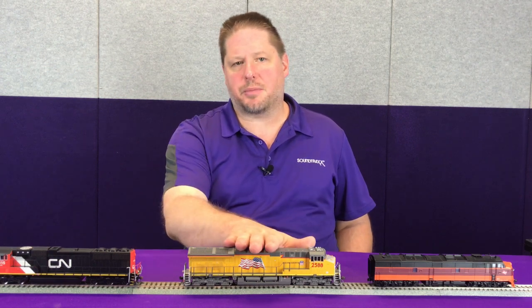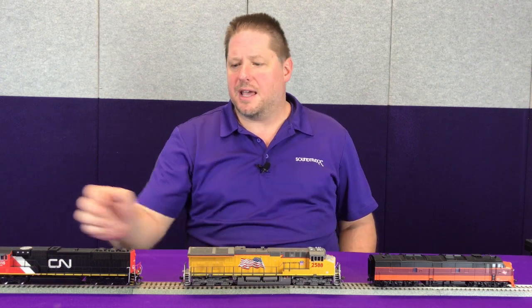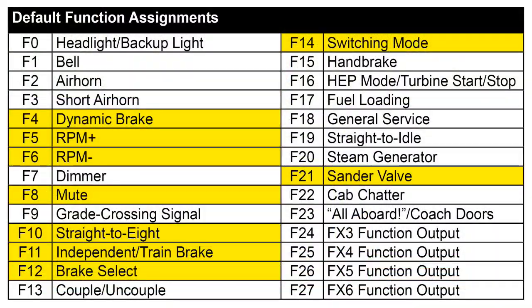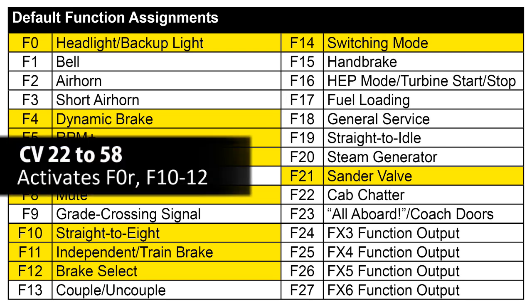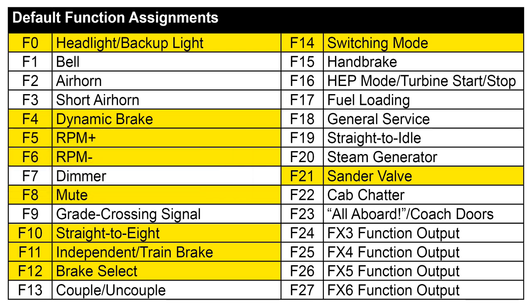For the last unit — our rear trailing unit — you're going to see all of the same functions set up as on the second unit, except on this one we may want to enable the headlight in reverse. Let's take a quick look at the CVs and how to do this.